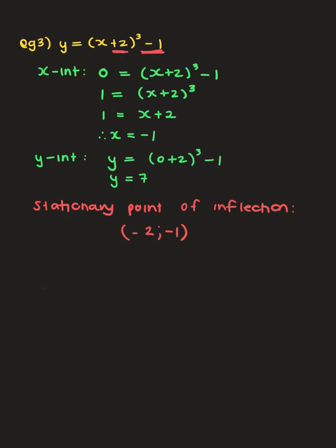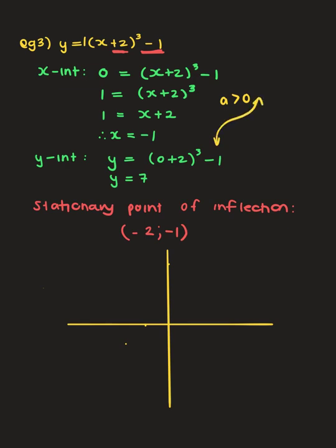Now we have everything to draw the graph. 'a' is positive with one stationary point of inflection, so the graph is strictly increasing with that inflection shape. Plot the x-intercept at (-1, 0), y-intercept at (0, 7), and the stationary point of inflection at (-2, -1). The graph goes up, does a little S-curve at the stationary point of inflection, then continues up.